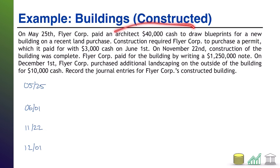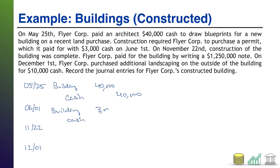On May 25th, we credit Cash $40,000. Even though there is no building yet, architect fees for construction of a new building are considered required and therefore a capitalizable expenditure, so we debit Building $40,000. On June 1st, the permit is also a required expenditure: debit Building, credit Cash $3,000. On November 22nd, construction is complete — the construction costs are the sticker price of the building, so we debit Building and credit Notes Payable $1,250,000.